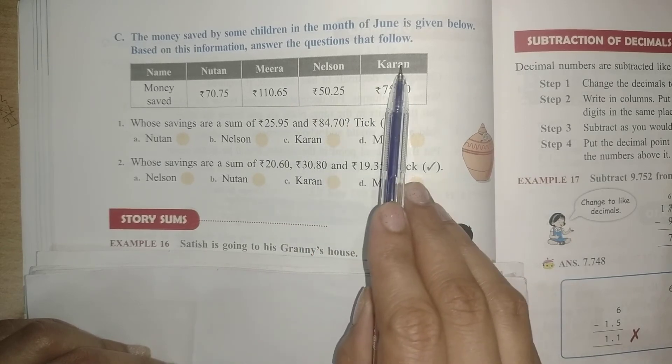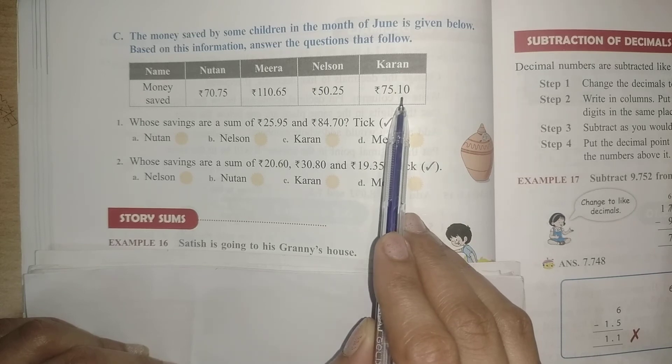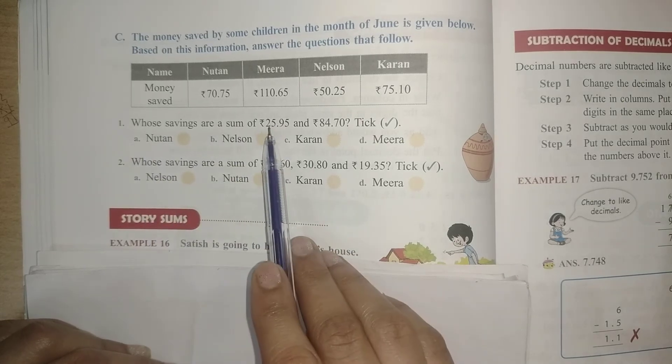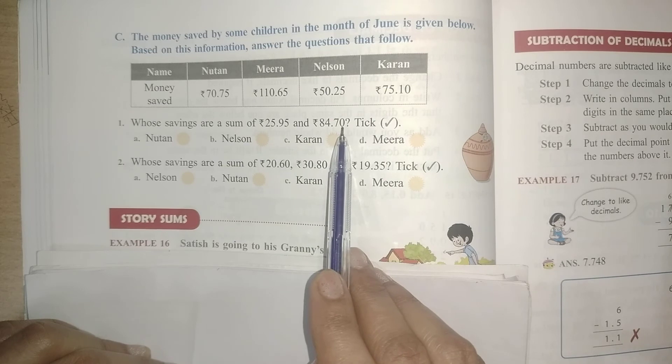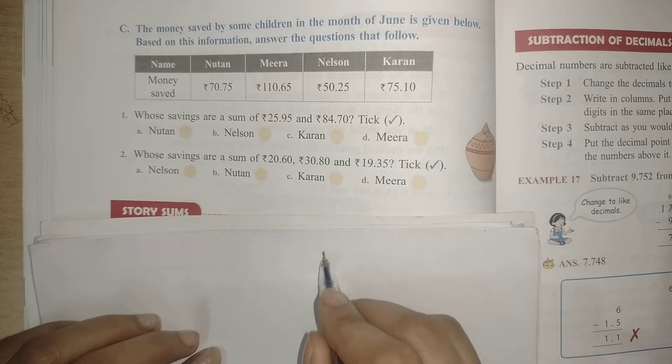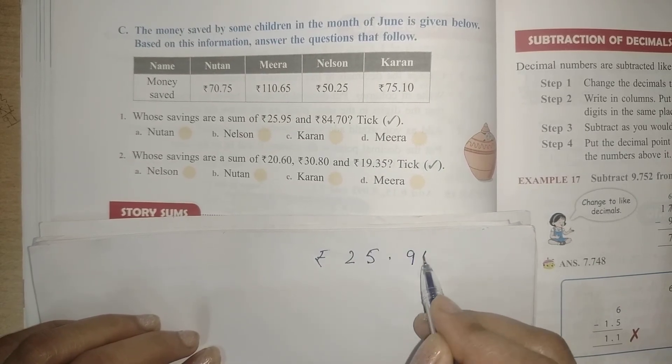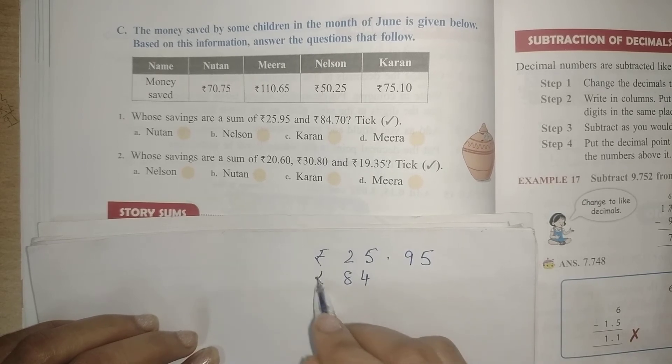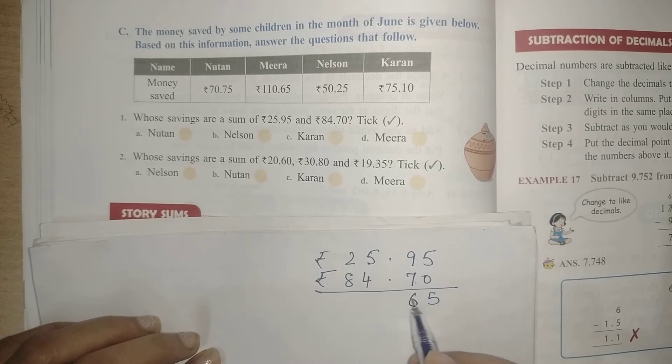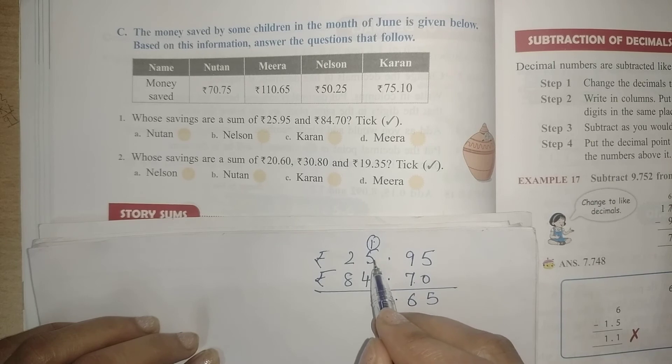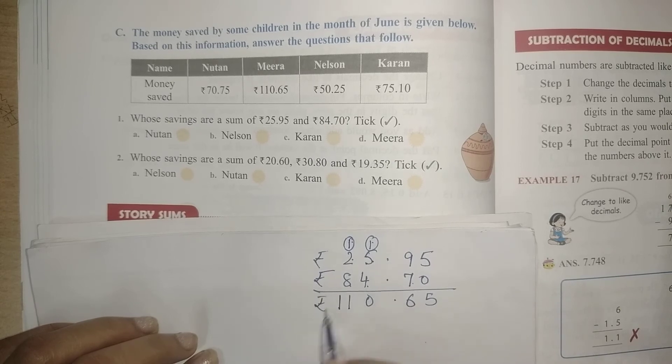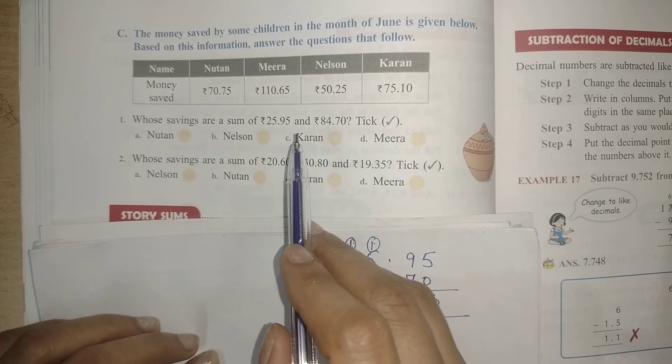Now we have to answer these questions. Whose savings are the sum of 25.95 rupees and 84.70 rupees? We need to find the sum. Let us add: 25.95. It is already in like decimals. Now add: 7 plus 0 is 7, 5 plus 9 is 14, then 5 plus 7 is 16, 1 carry over, 1 plus 5 is 6, 6 plus 4 is 10, 1 carry over, 1 plus 2 is 3, 3 plus 8 is 11. So this is 110.65. You can see it is of Meera, so we will tick here as Meera.